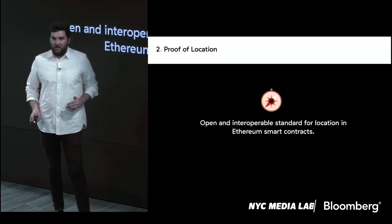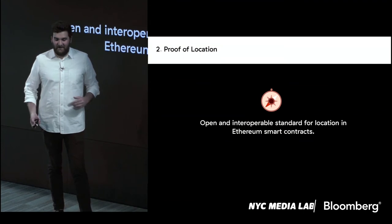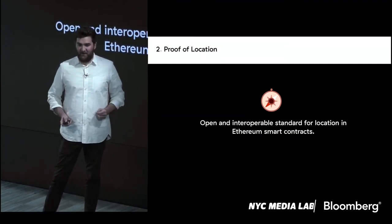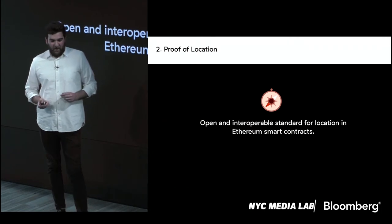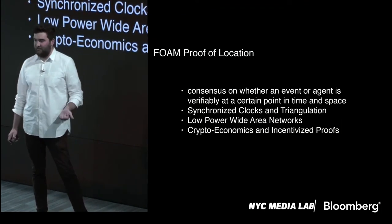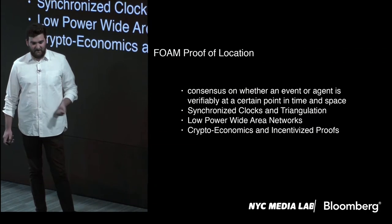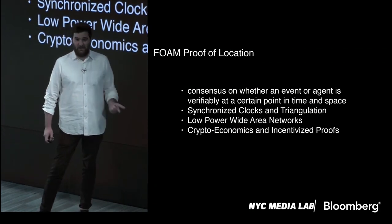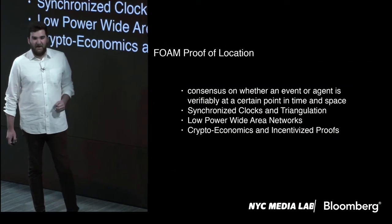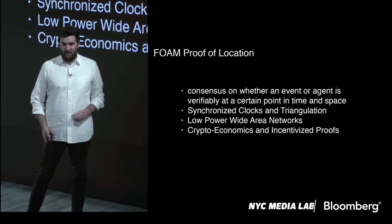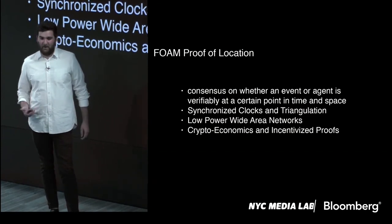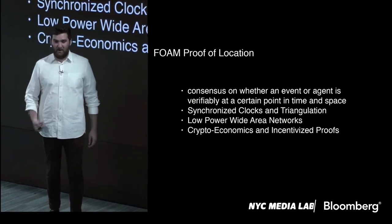Ultimately, what we want to know is: is what we see in the spatial index actually where it says it is? That's what proof of location is. We want to reach consensus on whether an event or agent has been verified to be where it says it is. We're solving this through synchronized clocks and triangulation with low power wide area network technology, as well as crypto economic incentives. This technology already exists today — time synchronization, low power radio — but we want to provide the incentives for people to run this hardware and set it up.